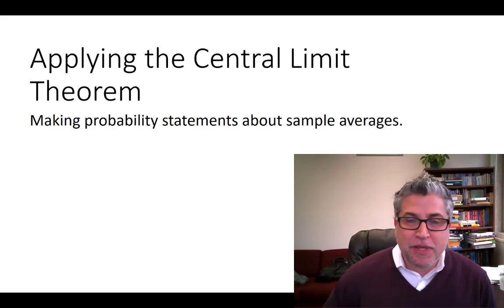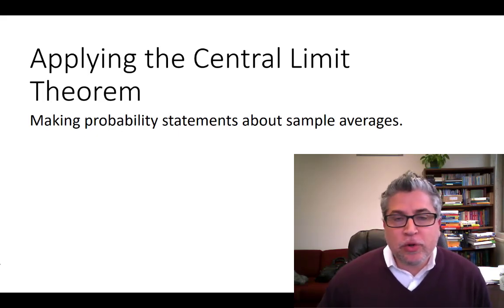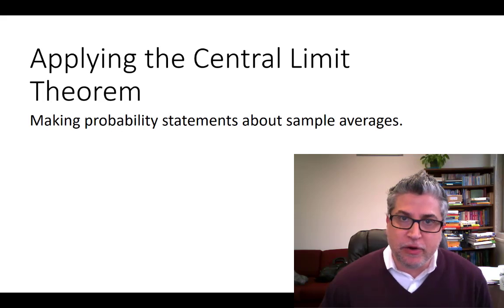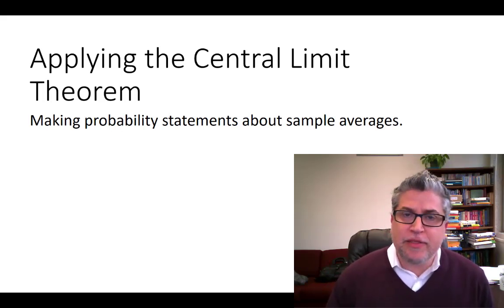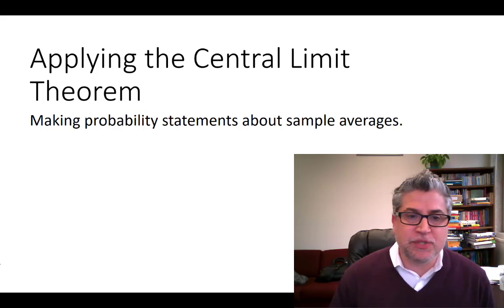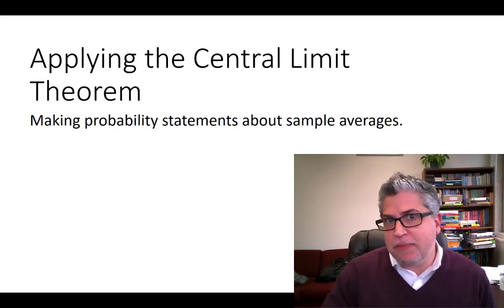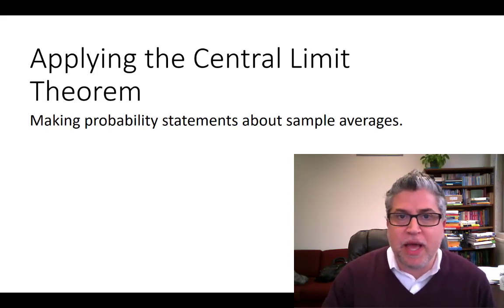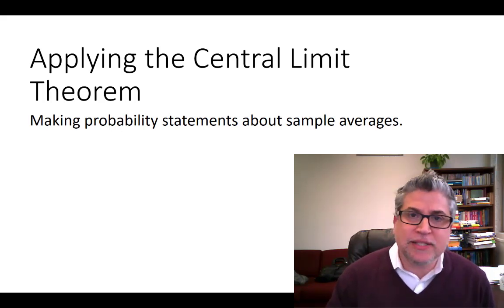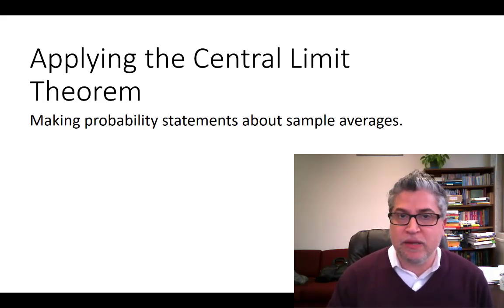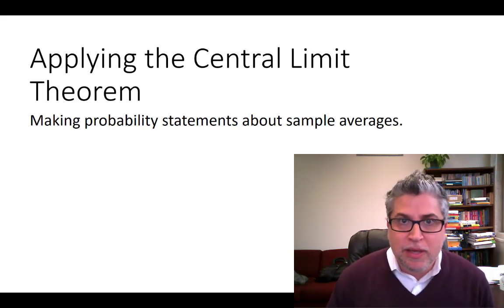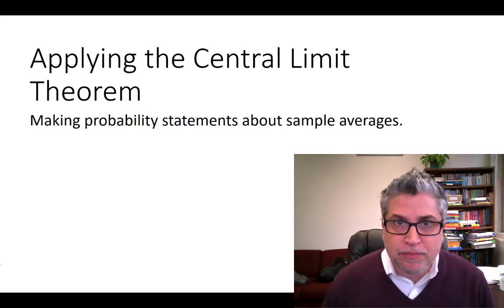Hey everybody, welcome back. In an earlier video, we talked about the central limit theorem, and here's how that worked. It said that if you're going to take a random sample from some population and calculate some sample statistic from that, like the sample average, you should treat that sample statistic like a random variable, because it came from a random sample.